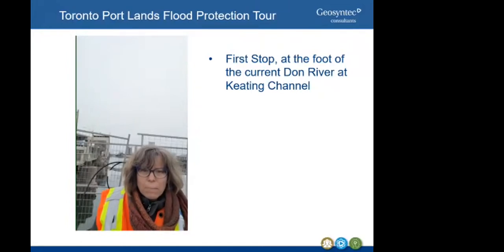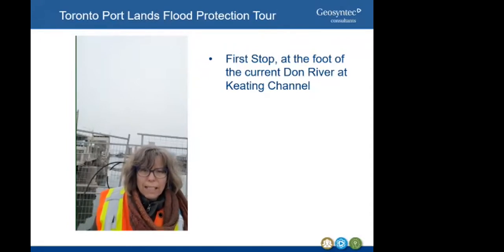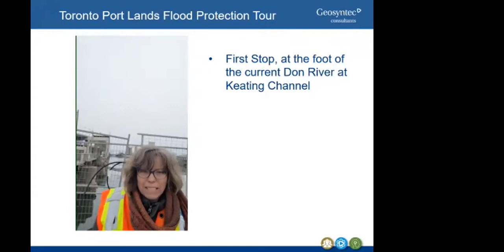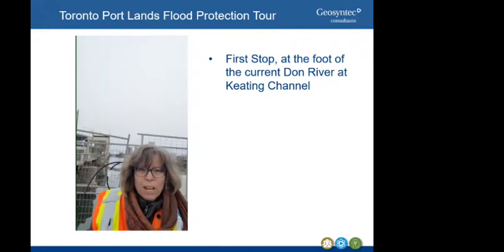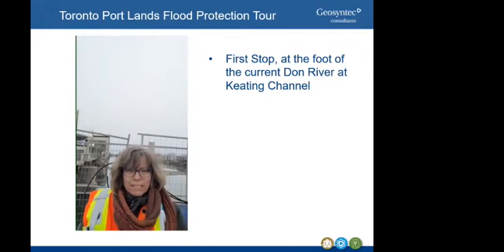Renaturalizing and creating a new river valley through contaminated lands with poor geotechnical quality soil through a bedrock valley is, to say the least, complicated. The overall cost of the project is $1.25 billion and involves excavating a new one-kilometer section of river through former industrial land. Once the flood protection is complete, the land is unlocked for redevelopment.